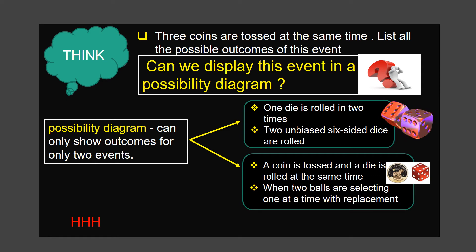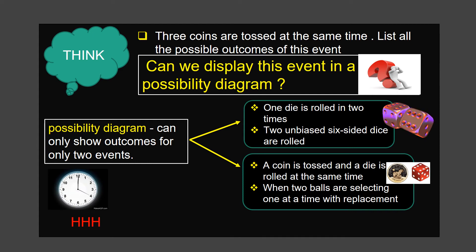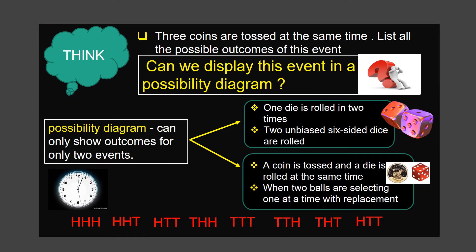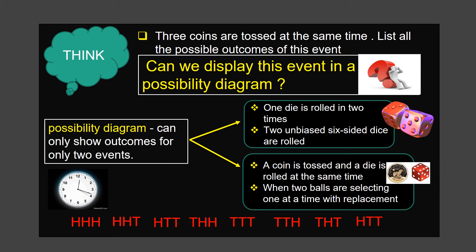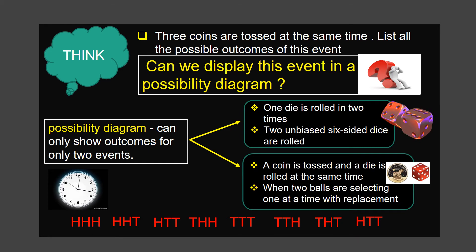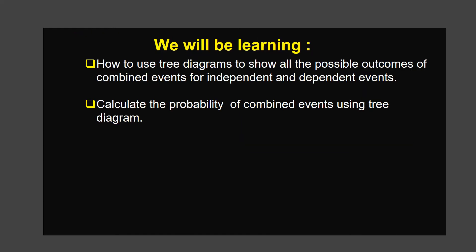Can you list all other combinations of this event? It takes a little bit of time to think and list. Did you get eight total outcomes? In an experiment like this, it is convenient to use a tree diagram to list all the outcomes of each stage in a clear and systematic way. In this class, I am going to focus on tree diagrams. We will learn how to use tree diagrams to show all the possible outcomes of combined events for independent and dependent events.